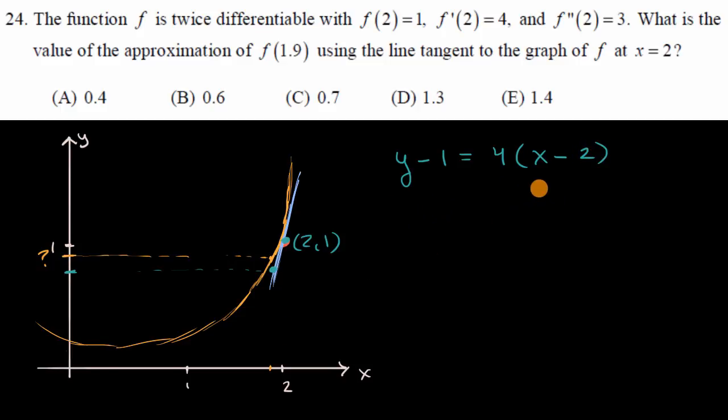Now we just substitute x = 1.9 to get our approximation for f(1.9). So we'd say y minus 1 equals 4 times (1.9 minus 2). 1.9 minus 2 is negative 0.1. Four times negative 0.1 simplifies to negative 0.4. Now you add 1 to both sides, you get y equals 0.6.